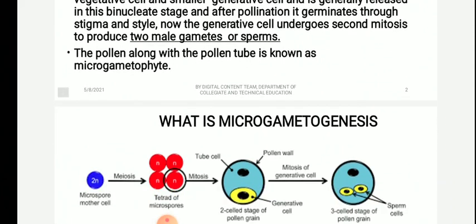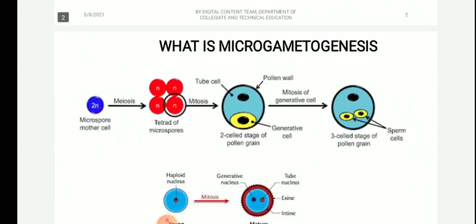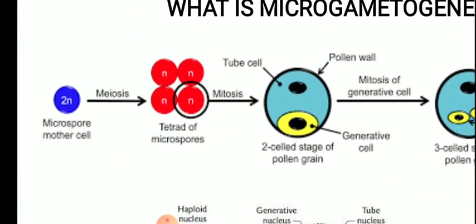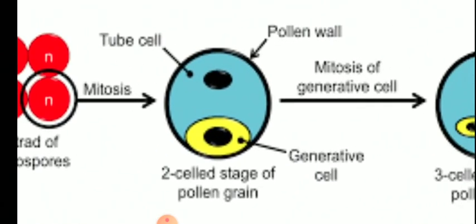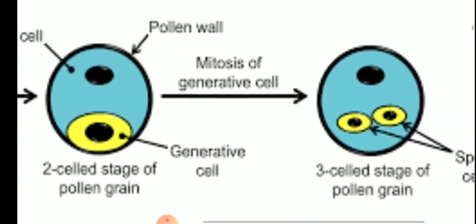The pollen along with the pollen tube is known as the micro gametophyte. Inside the sporogenous tissue, the pollen mother cell will differentiate and undergo meiosis to form tetrads of microspores. These microspores separate and become pollen grains, increasing in their volume. The pollen grain is the first cell of the male gametophyte. This pollen grain undergoes unequal mitosis to result in a bigger vegetative cell and a smaller generative cell.